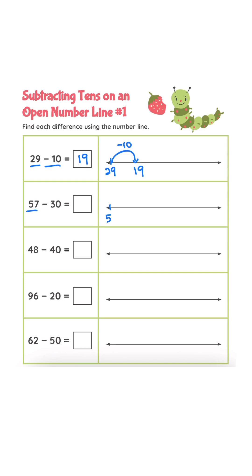57 minus 30. 57 minus 10 is 47. 47 minus 10 is 37. 37 minus 10 is 27. Answer is 27.